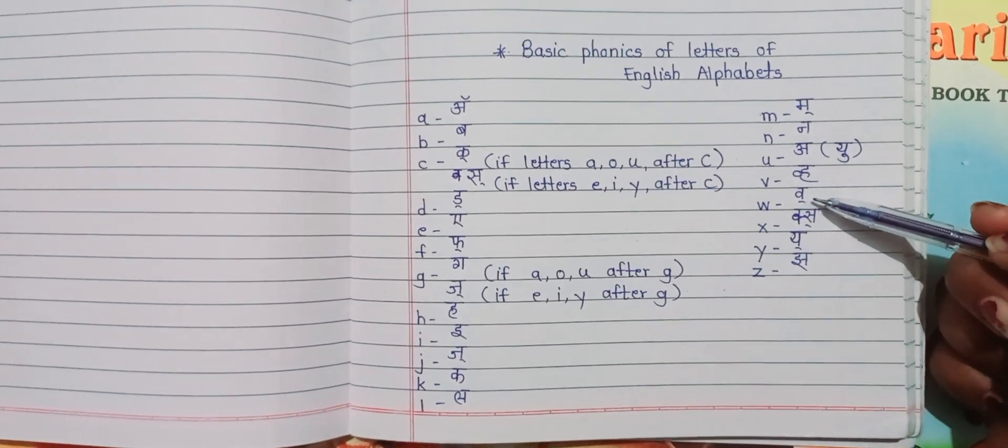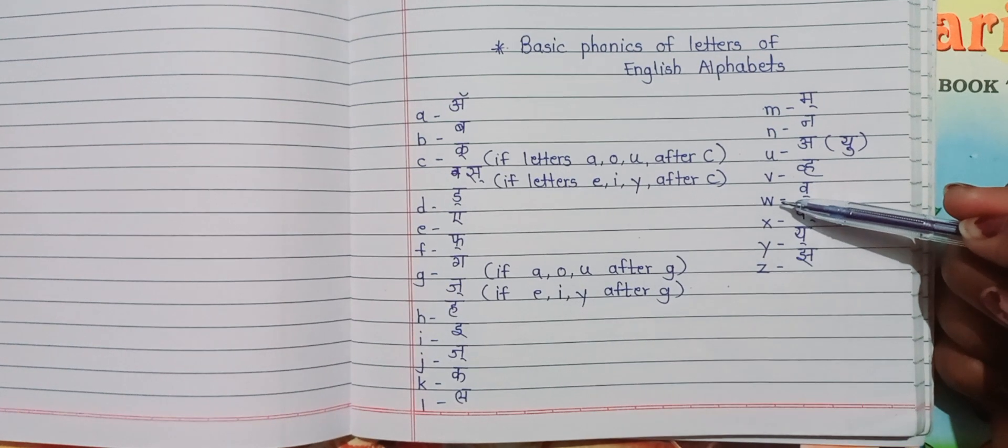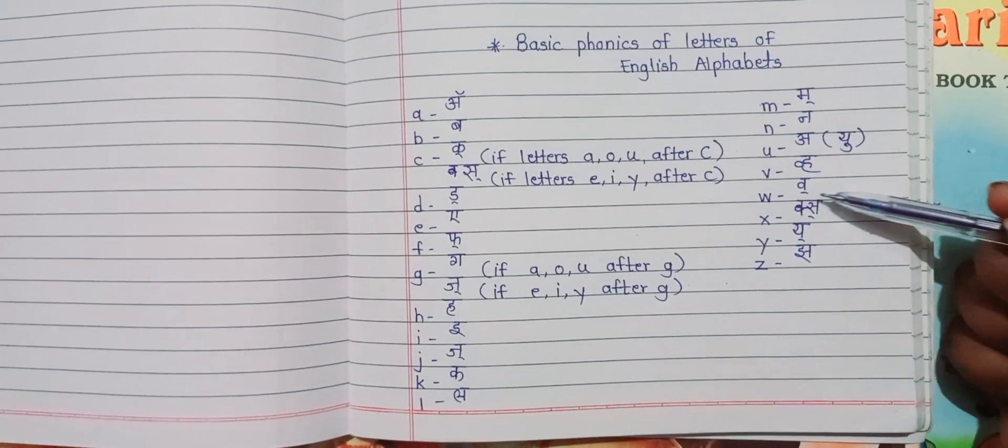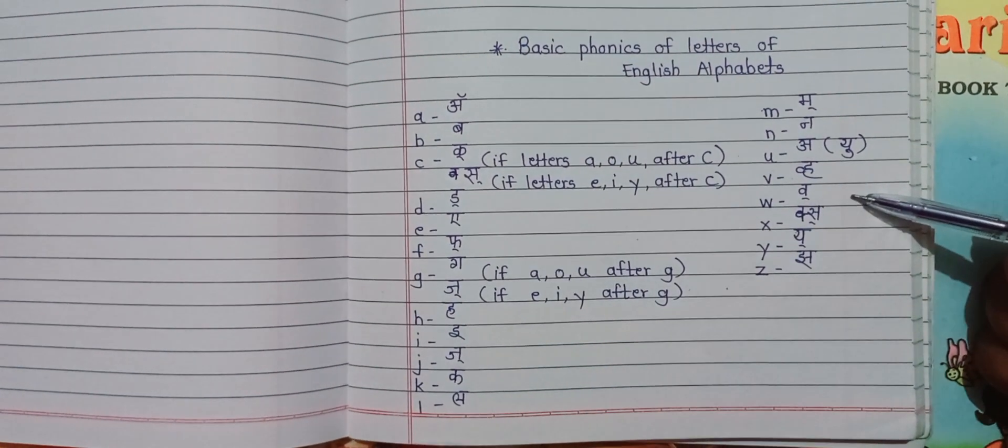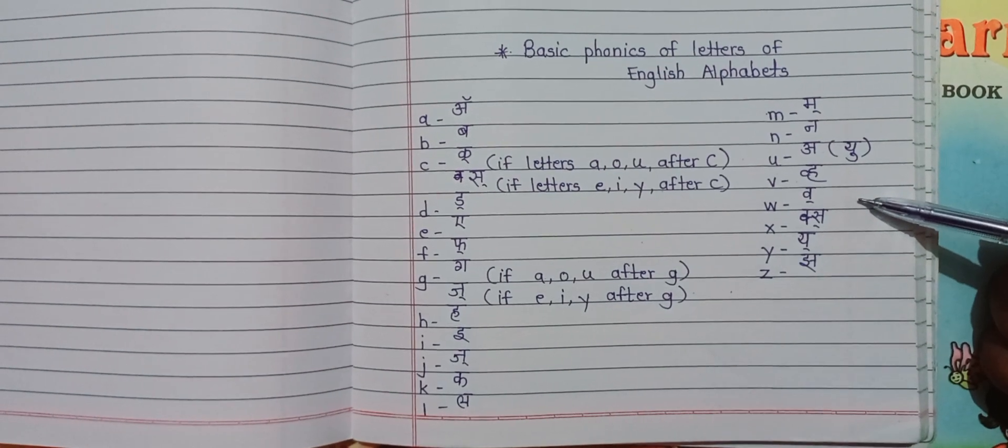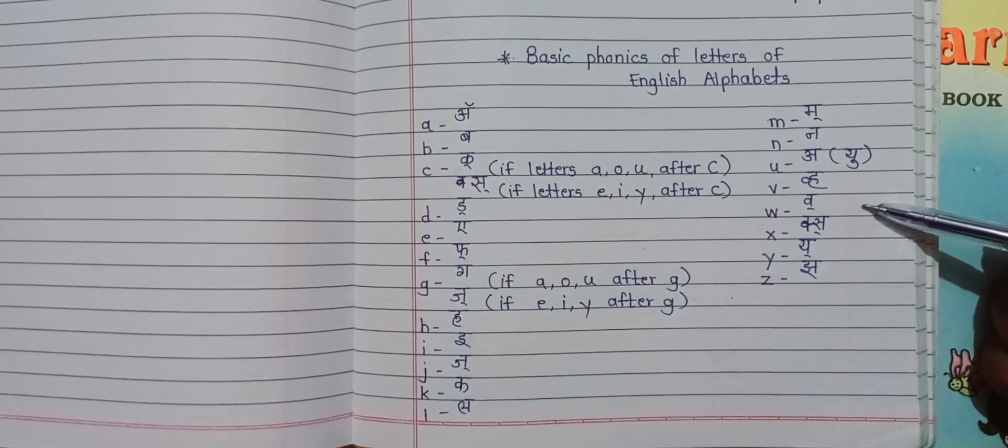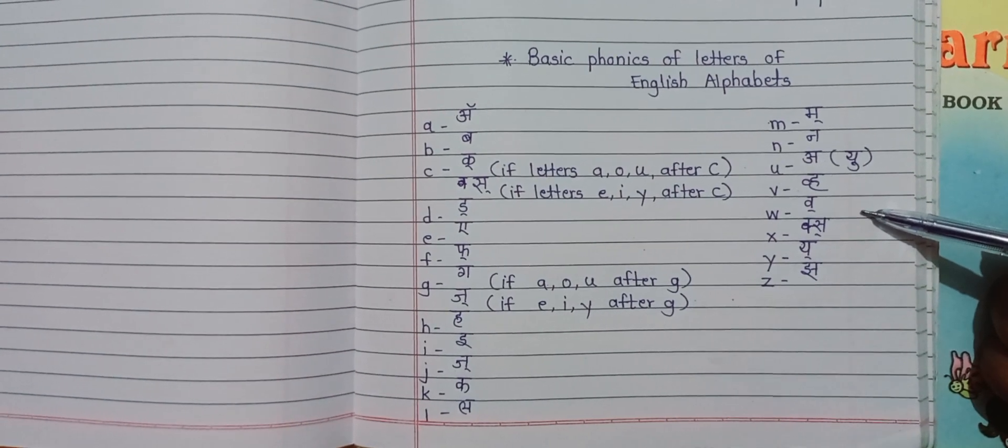See people make mistake while pronouncing this W, like the words W-A-T-E-R, it's water but they say otter. W-A-S, was but they say oz.